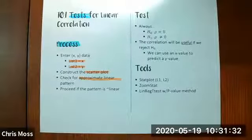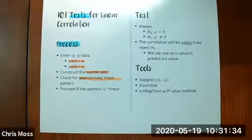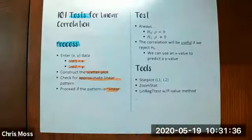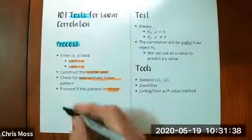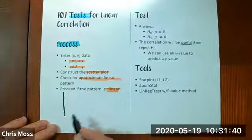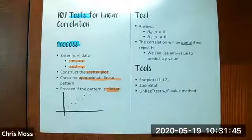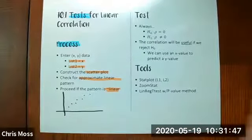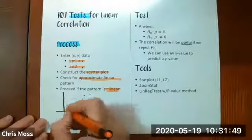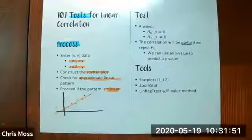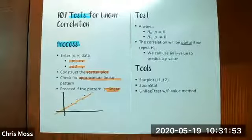Once you get that data in there, what you're looking for is something that is approximately linear. And we're only going to proceed with the test if the pattern is approximately linear. So let me be clear on that. We're going to graph a scatter plot. And I'm looking for something, maybe positive, maybe negative slope, but something that is approximately linear in pattern.